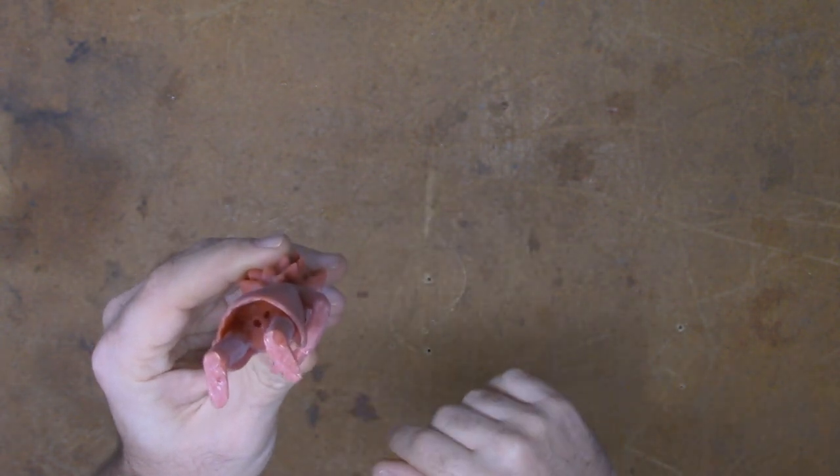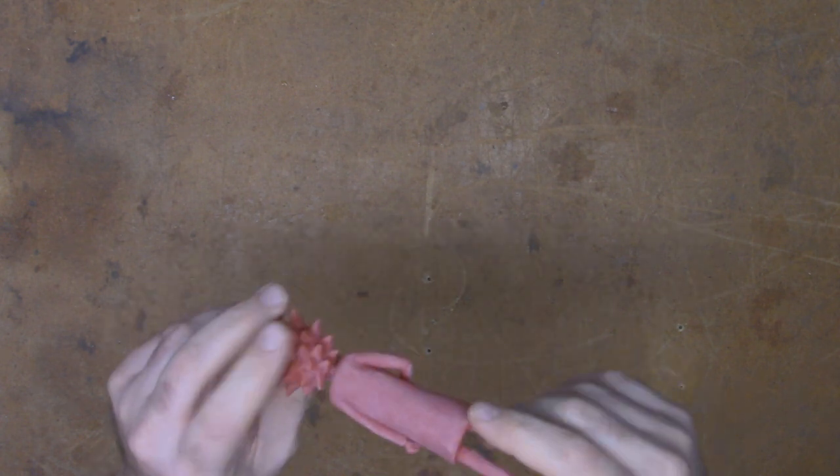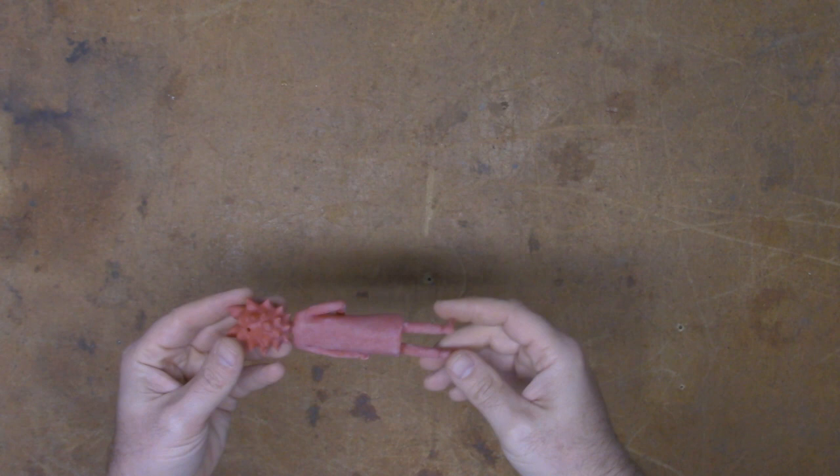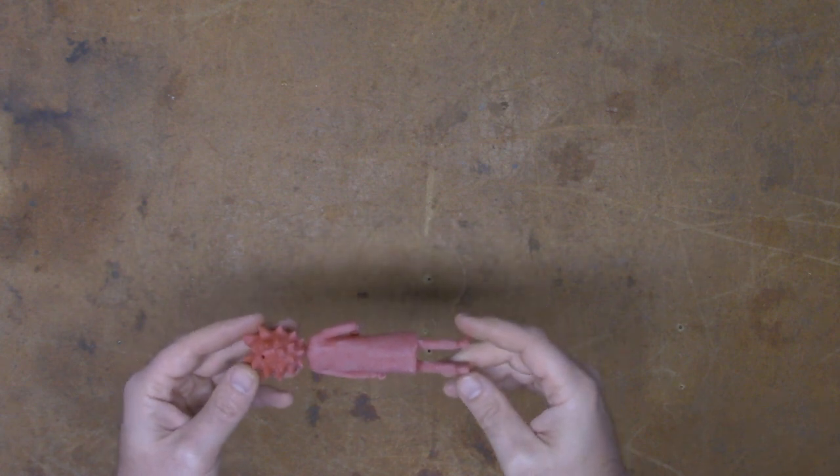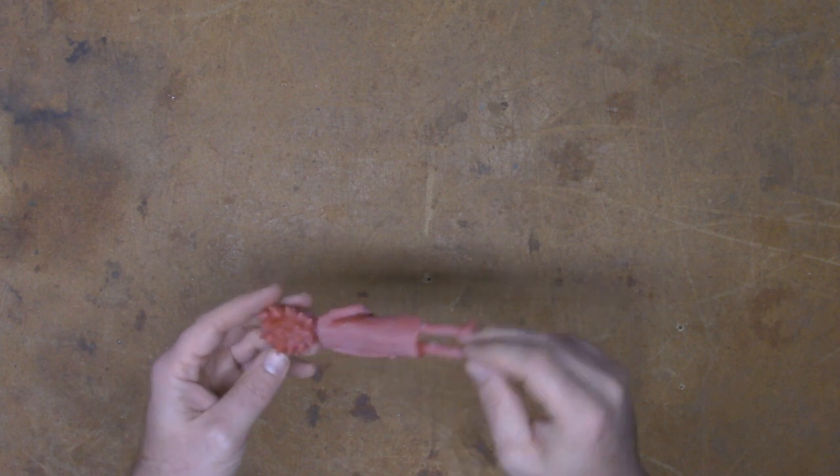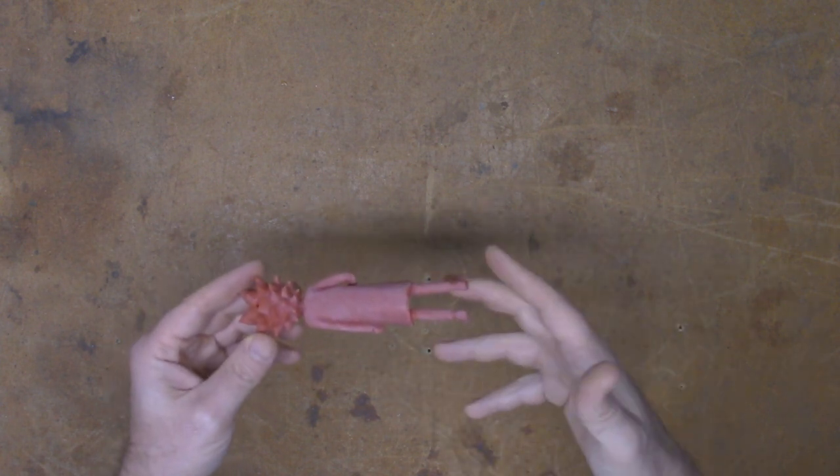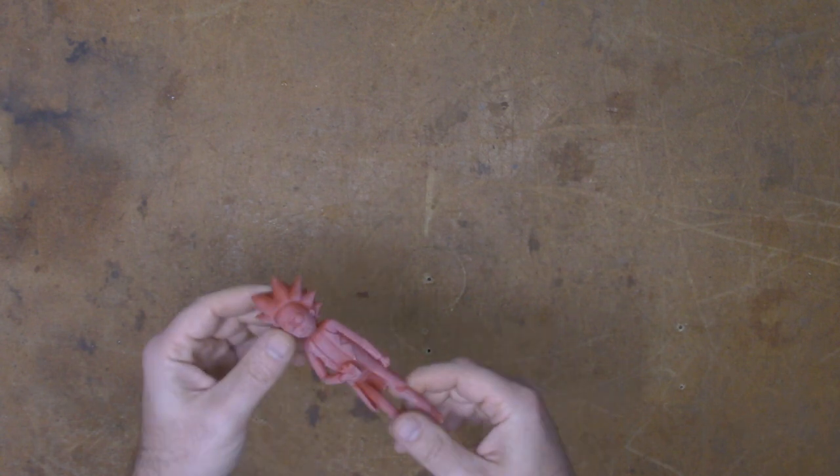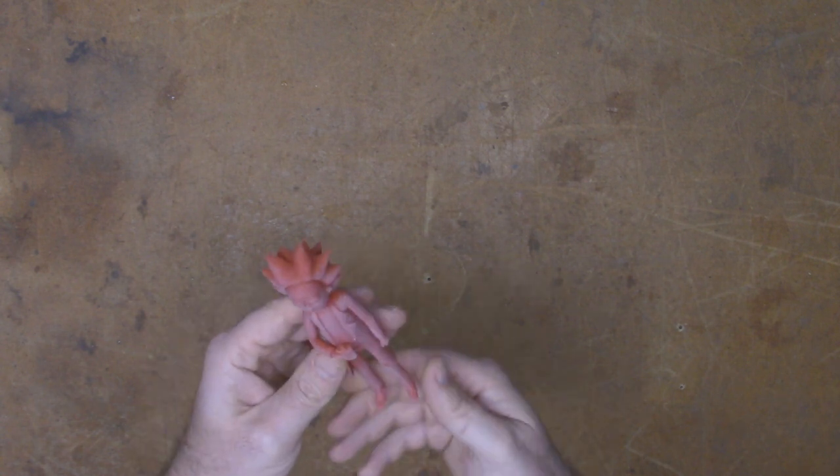So when you hollow out models you need to put holes in it so any of the resin inside can drain. Most of us know that the difficulty is curing inside the model.